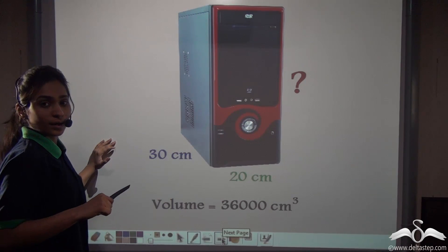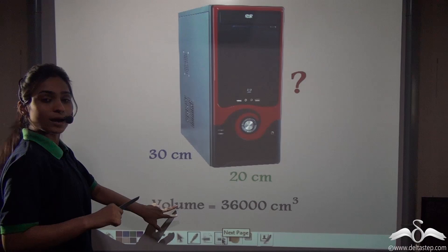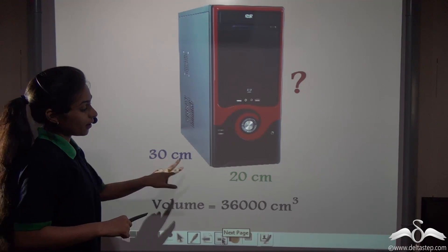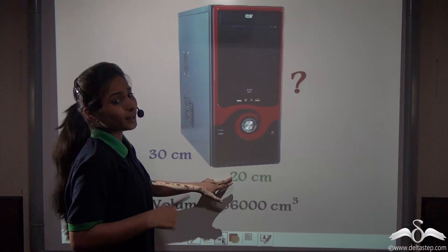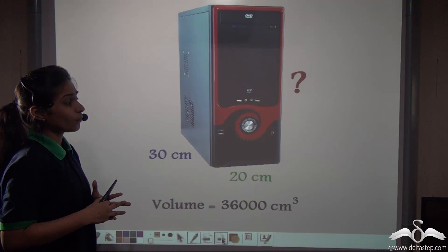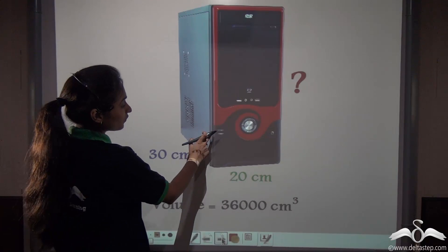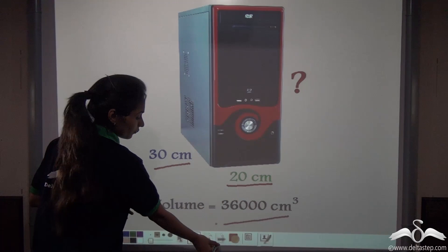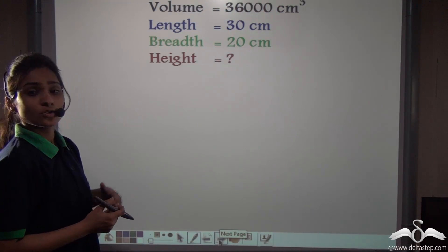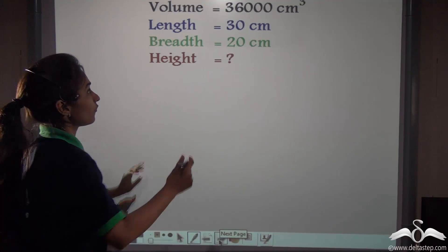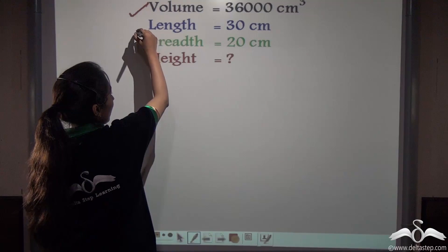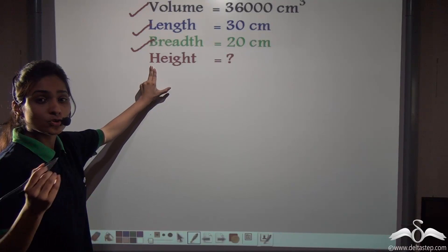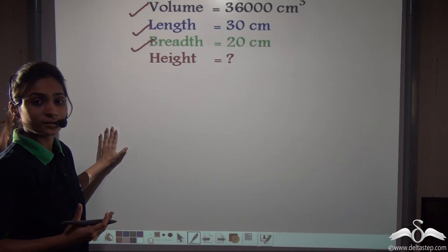Now I got this CPU from a market whose volume was known, length was known to me, breadth was known to me but height was not known. So can you help me find out the height of this CPU when I have the length, breadth and the volume? I have a problem like this, where I know the volume of the CPU, I know the length, I know the breadth but height is missing. So using the formula of the volume, can you find out the height here?